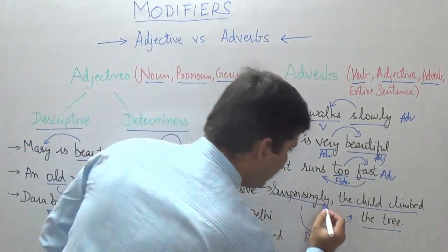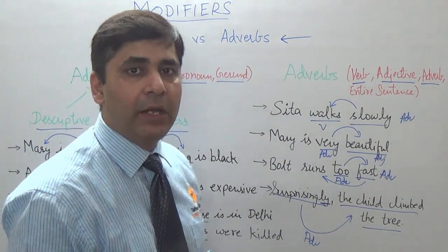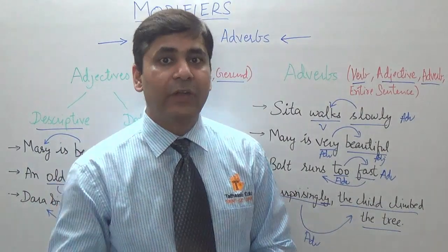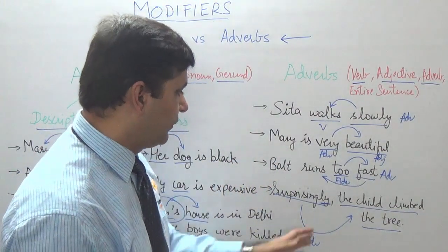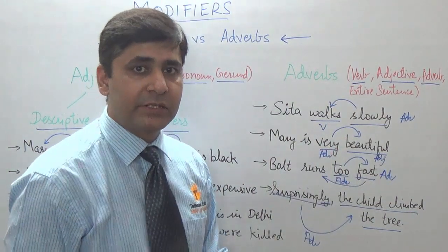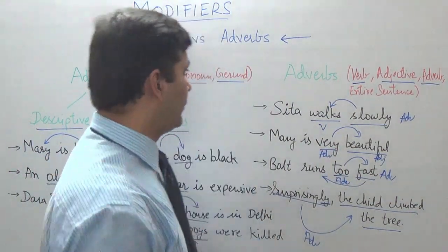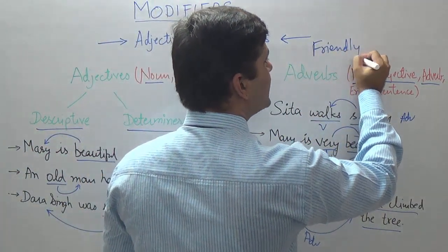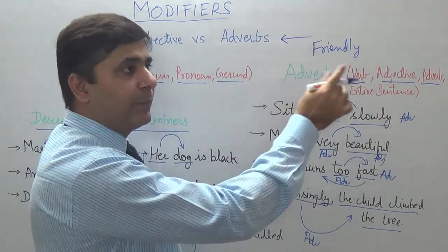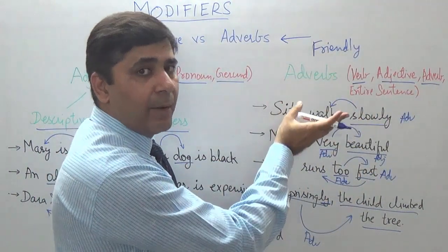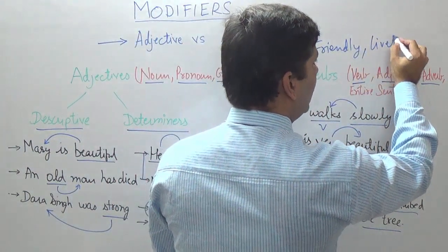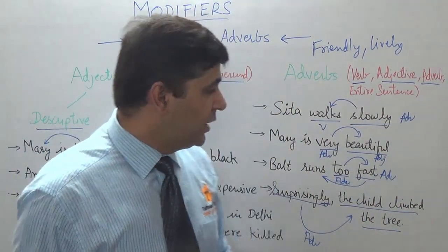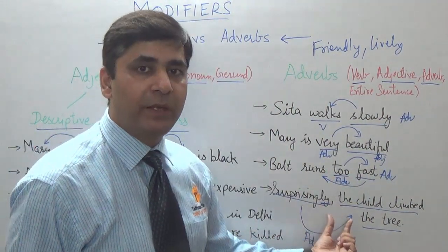Remember: a word ending with -ly is mostly going to be an adverb — on the GMAT it will mostly be an adverb. There may be some exceptions. For example, 'friendly' — that word is not an adverb; it is an adjective. 'Ram is friendly' describes Ram. But mostly words ending in -ly will be adverbs.